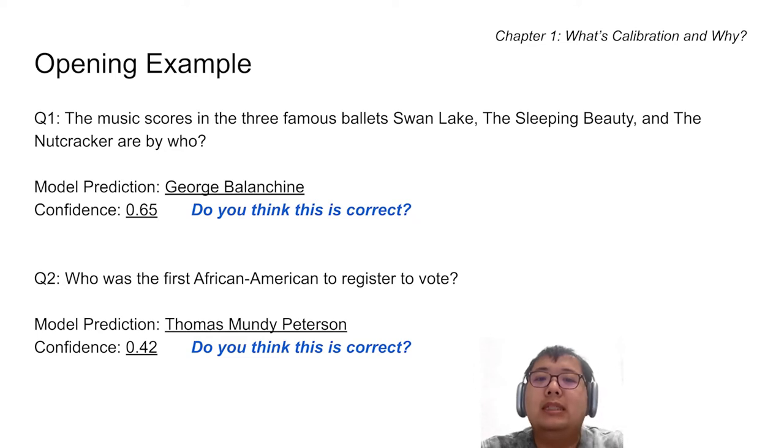Question number one: The music scores in the three famous ballets, Swan Lake, The Sleeping Beauty, and The Nutcracker are by who. Here, the AI answers George Balanchine with its confidence .65.